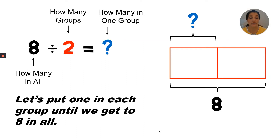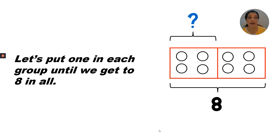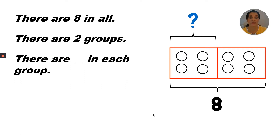Let's put 1 in each group until we get 8 in all. We're basically using the fair share strategy to divide. We put 1 in each group at a time: 1, 1, 2, 2, then 3, 3, 4, 4. I've got 8 in all — 1, 2, 3, 4, 5, 6, 7, 8. I've got 2 groups, and now I know how many are in 1 group. There are 8 in all, there are 2 groups, and there are 4 in each group.